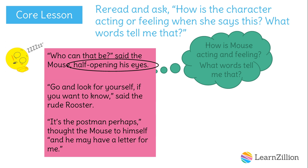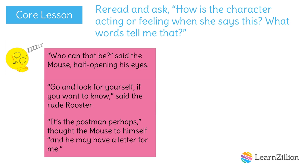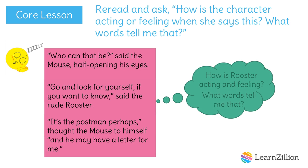Let's try the next piece of talking. Go and look for yourself if you want to know, said the rude rooster. How is rooster acting? What words tell me? Well, he's sounding a little mean — go and look for yourself isn't a very nice thing to say. And this word, rude, helps me know. The text says rooster is acting rude.